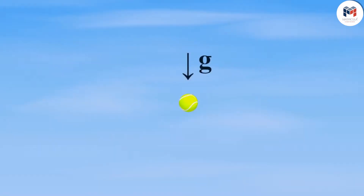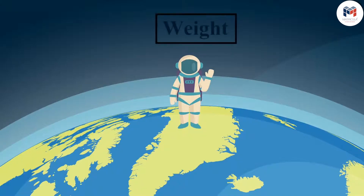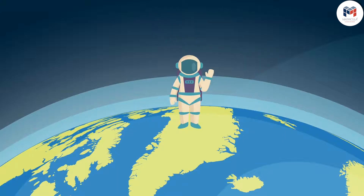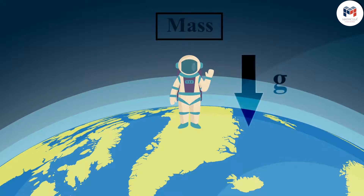We know from the previous video that the earth attracts every object with a certain force. The weight of an object is this force with which it is attracted towards the earth. This force is defined on the basis of the mass of the object and the acceleration acting due to gravity.